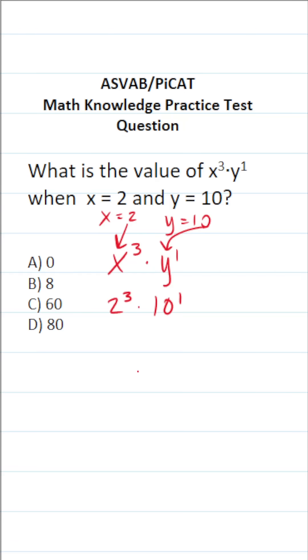Of course, this question is really testing your understanding of some of the laws of exponents. Notably, that whenever you raise something to the first power, it's just that number. So for example, 5 to the first power is just 5, 7 to the first power is just 7.